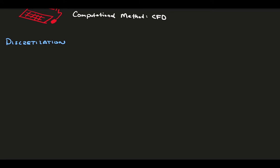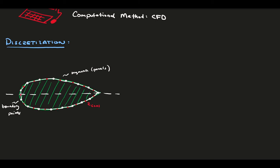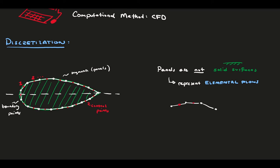So what do we mean by discretization? Consider an airfoil. Generally, the surface of the foil represents a continuous, smooth curve. For the panel method, we divide this curve up into many small connected segments, or panels. The ends of the segments are called boundary points, and the centers of the segments are called control points. Each segment gets a number that rises sequentially as you count the panels around the curve. It's important to keep in mind that the surface of the foil doesn't actually exist, and the panels do not represent solid surfaces. The panels are places where we place elemental flows.